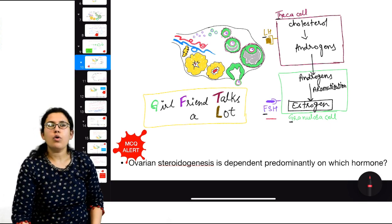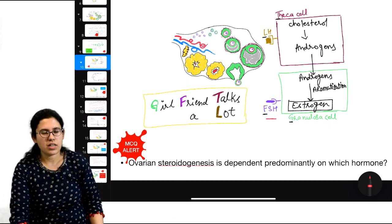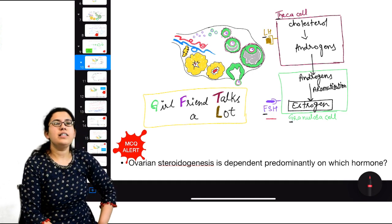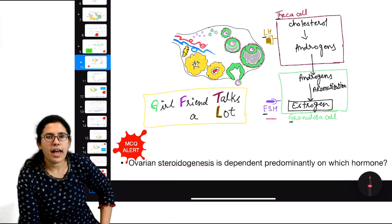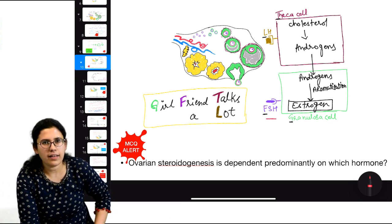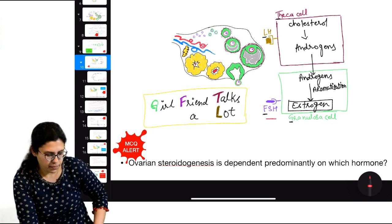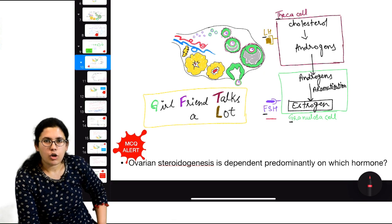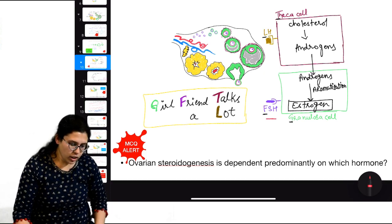This is called the two-cell, two-gonadotropin theory. Two cells: granulosa cell and theca cell. Two gonadotropins: FSH acting on granulosa cells and LH acting on theca cells. A useful mnemonic: 'Girlfriends Talk a Lot' — G for granulosa cell has F for FSH receptor; T for theca cell has L for LH receptor. This is how follicles form estrogen under the effect of FSH and LH.